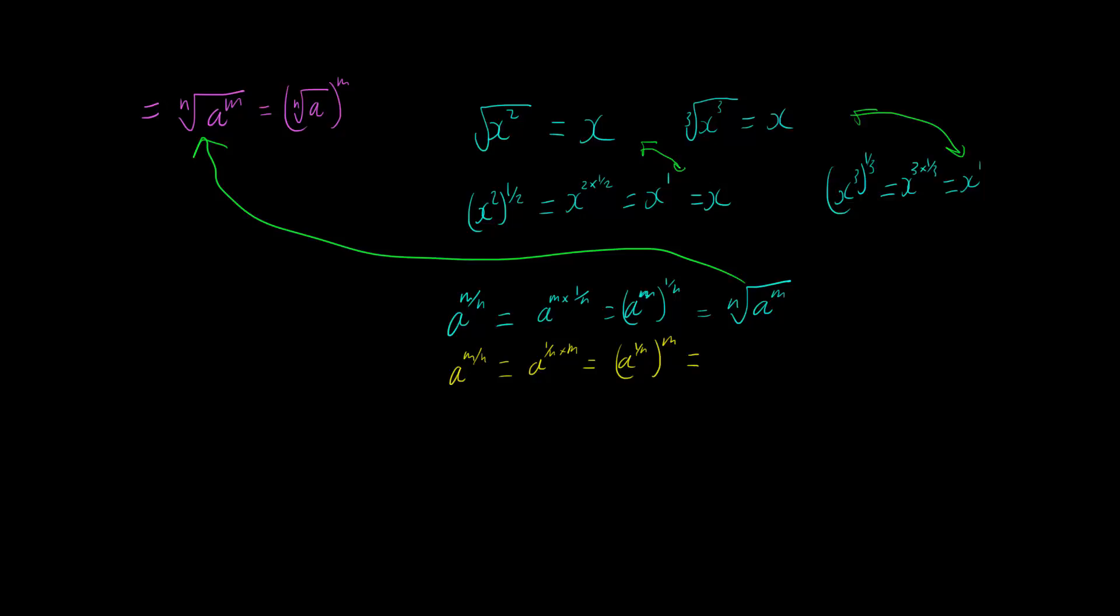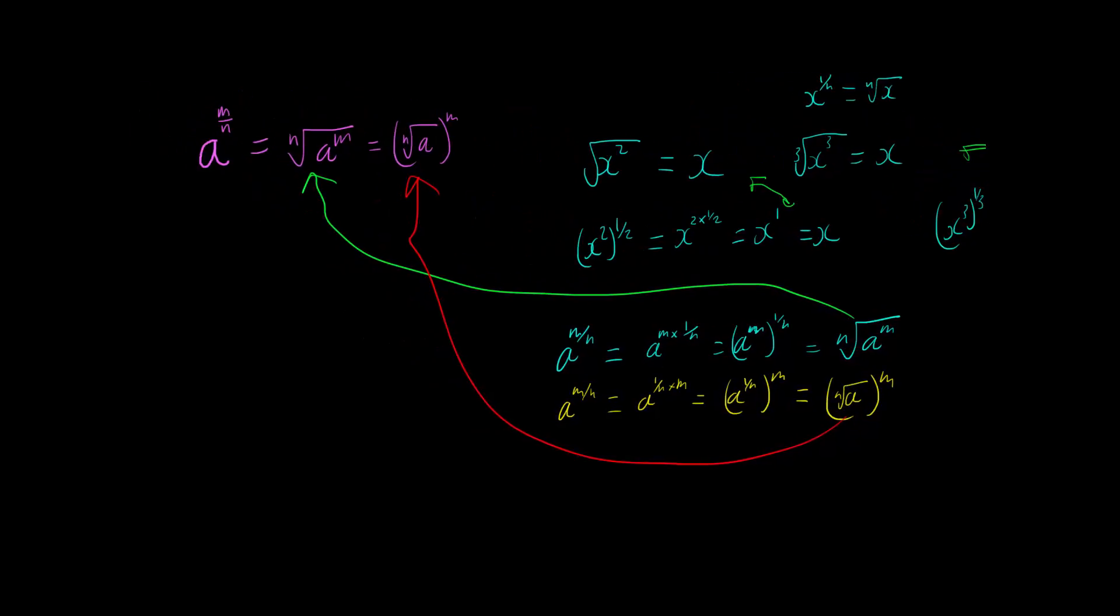So a to the one over n we were shown is the nth root and then that is raised to the power of m. So that gives us that second part of the proof of the rule.